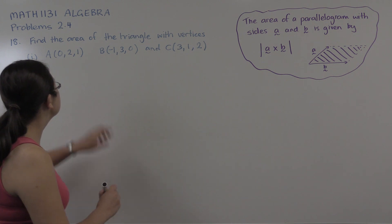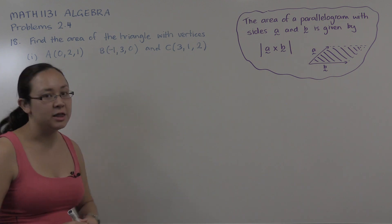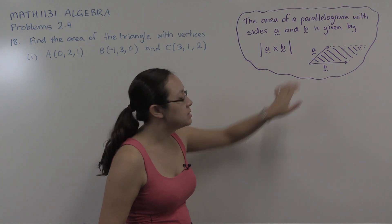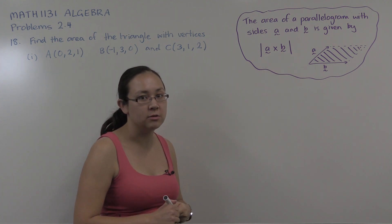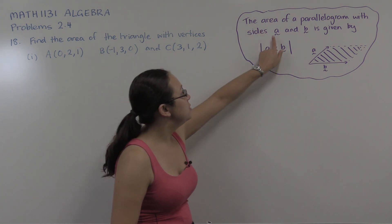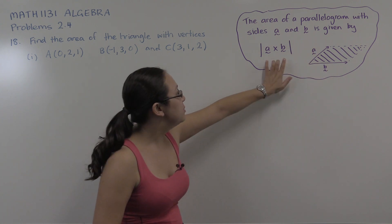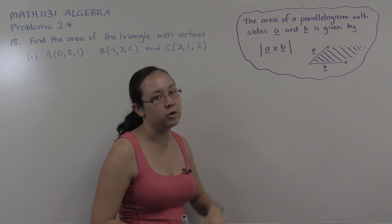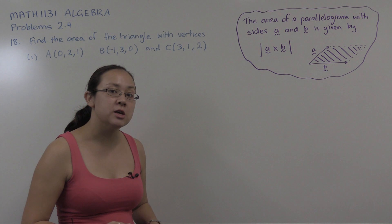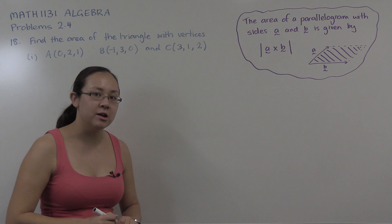This problem is asking us to find the area of a triangle with vertices given in R3. On the board here I've written the theorem that's going to help us work out the area of the triangle. The result is that the area of a parallelogram with two vectors a and b as sides, as drawn in this diagram, is given by the length of the cross product of a and b. This helps us find the area of a triangle because a triangle is just half the area of the parallelogram.